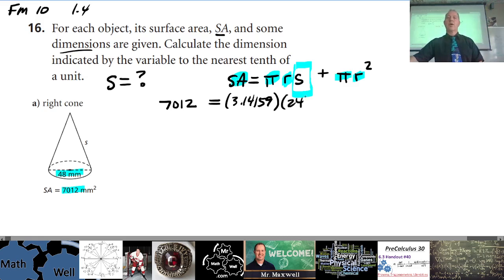r is 24, s is just s, we leave it as s for now because that's what we're trying to find. Plus again pi, 3.14159 times 24². All right, so that's how you set up your equation and then